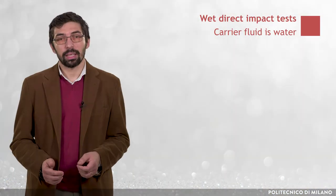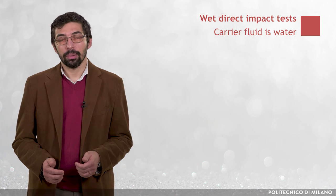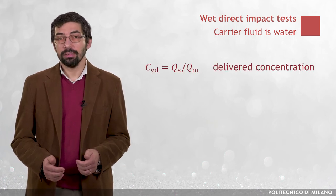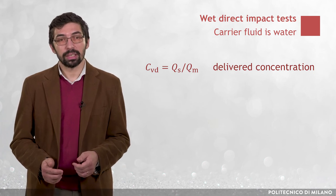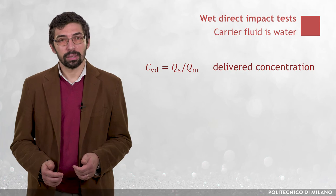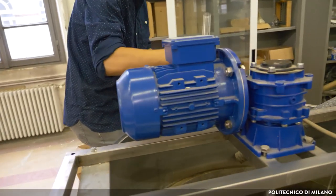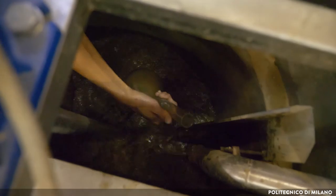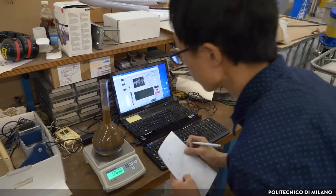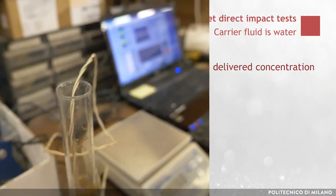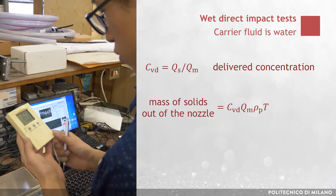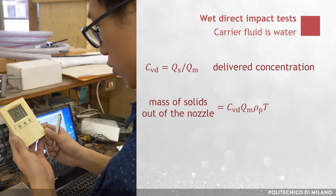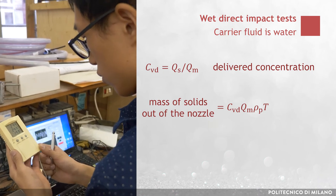In closed slurry circuits, the amount of solids in the flow is usually expressed in terms of delivered solid concentration CVD, that is the ratio between the volumetric solid flow rate QS and the volumetric flow rate of the slurry mixture QM. In the current loop, the CVD is obtained through sampling from the pipe entering the stirred tank using a flask, a balance, and a thermometer. From the CVD, the mass of solids exiting the nozzle during the testing time can be obtained as CVD times the slurry flow rate QM, times the density of the particles ρP, times the testing time T.